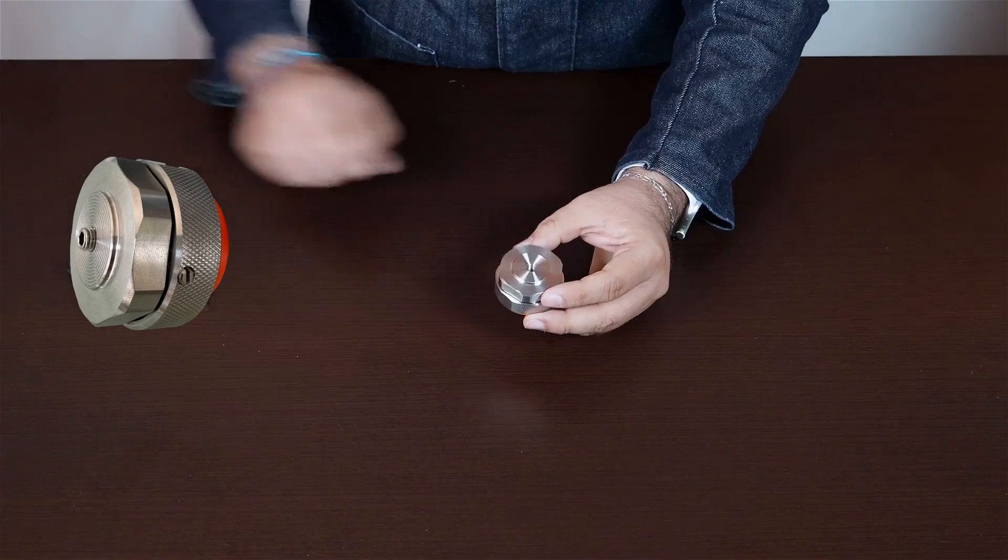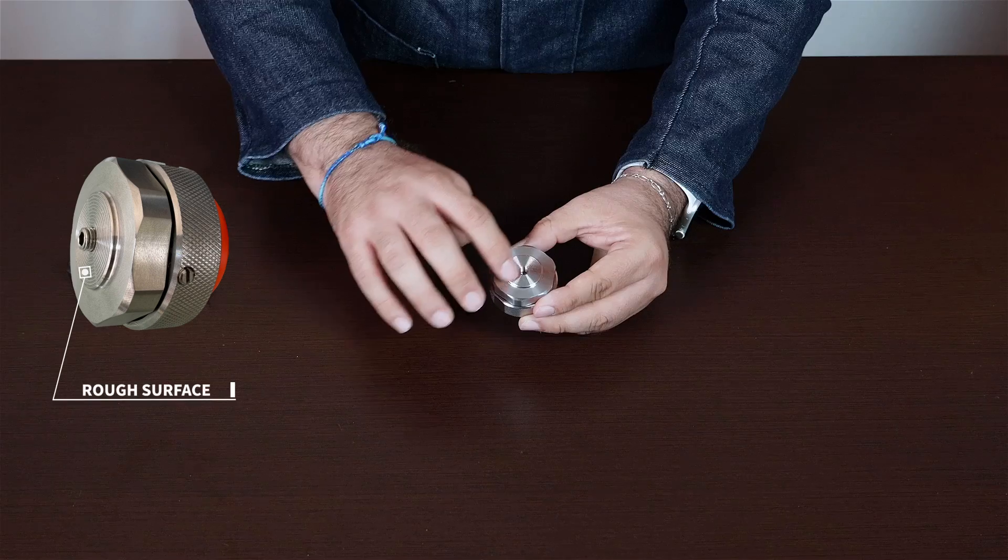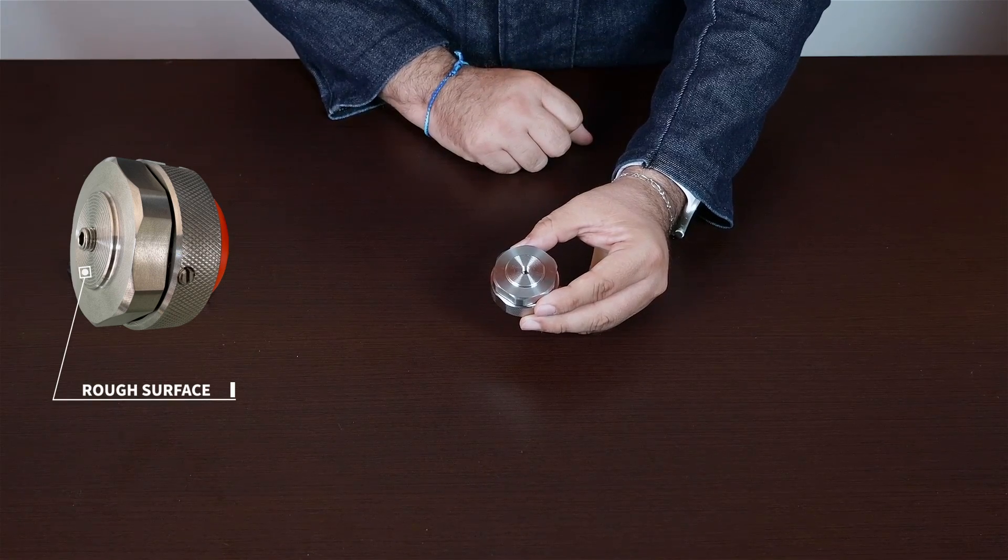Upon removing the set screw, you will find a rock surface of the sensor. This provides better contact if you're using an epoxy adhesive or any other kind of adhesive.